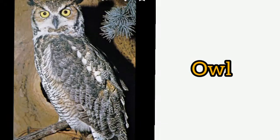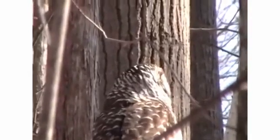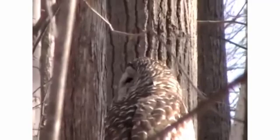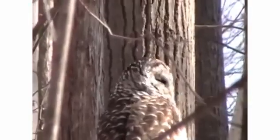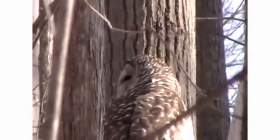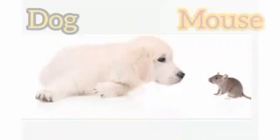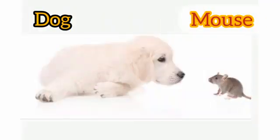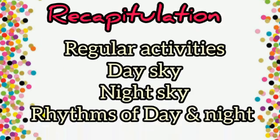Owls and cats have big eyes. Owls can see what is behind them by rotating their heads almost fully. Mouse and dogs have a sharp sense of smell. Today we learned our daily activities from morning to night.